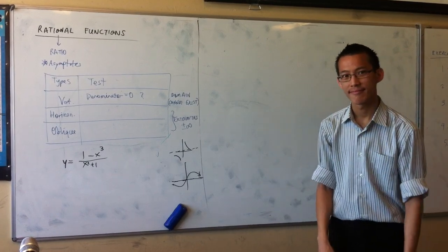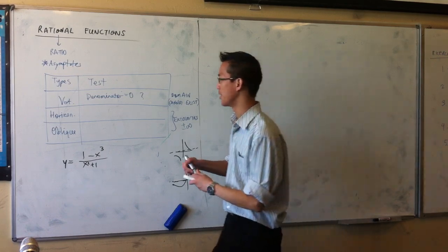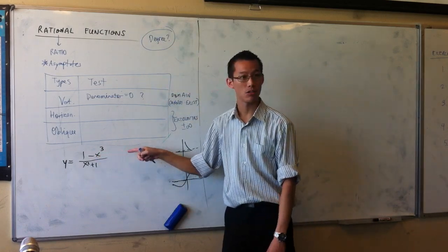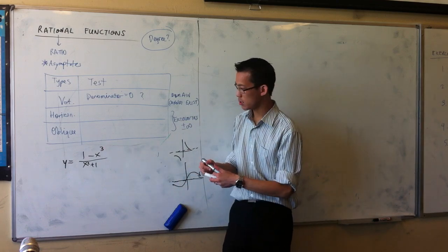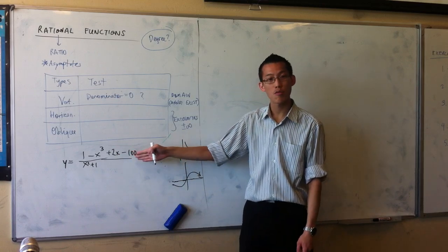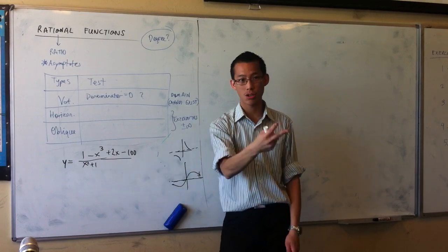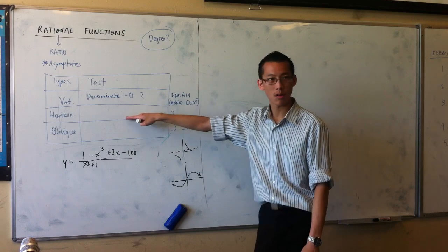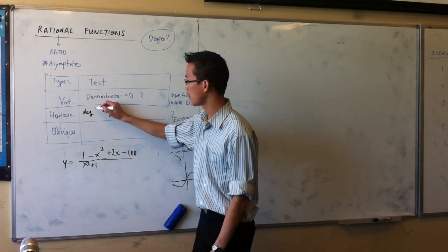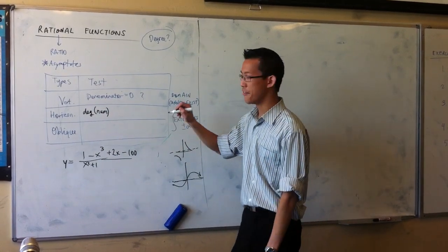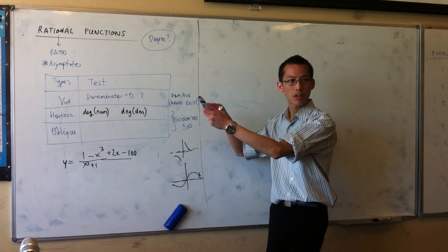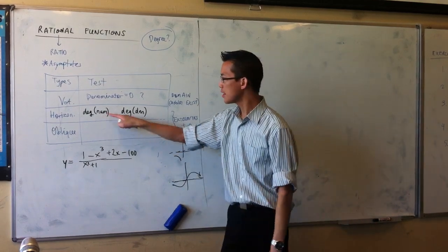The key word here is degree. What does degree mean when you have a polynomial like 1 minus x cubed? Degree means what's the highest power — so for 1 minus x cubed the degree is 3. The degree of the numerator and the degree of the denominator — I'm going to give you the test for whether something is horizontal or oblique. Think about the degree of the numerator and compare it to the denominator. A horizontal asymptote means you're going towards one concrete value. So if these two degrees are equal...